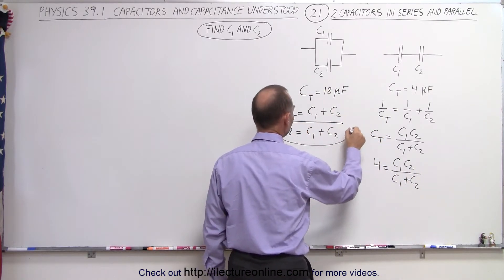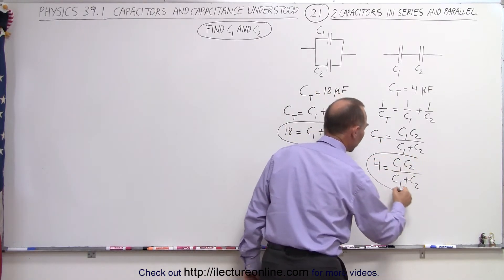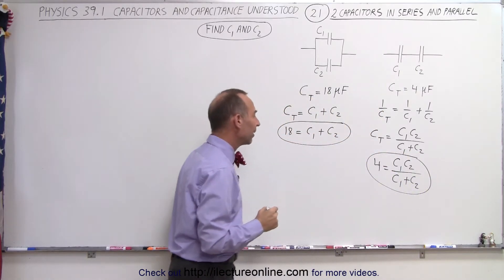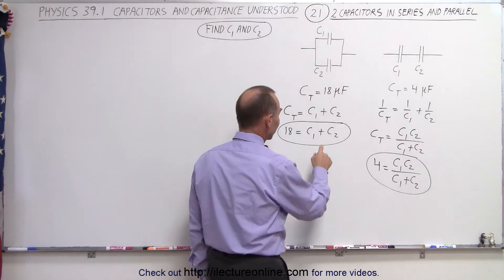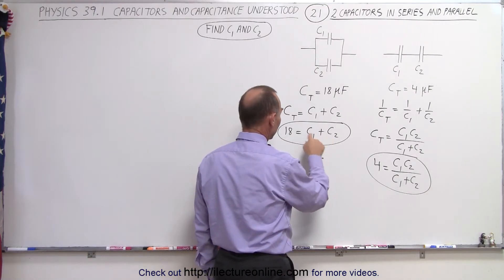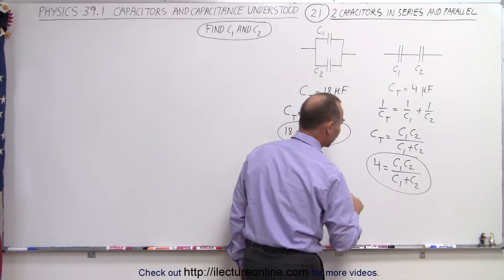So now what we have here is we have these two equations, which we must solve simultaneously. Well, for one, what we could do is we could say this C1 plus C2 being 18 could substitute in for the denominator here.